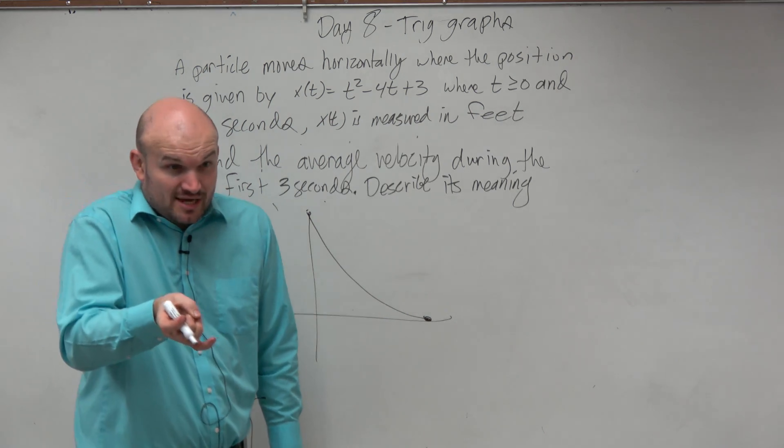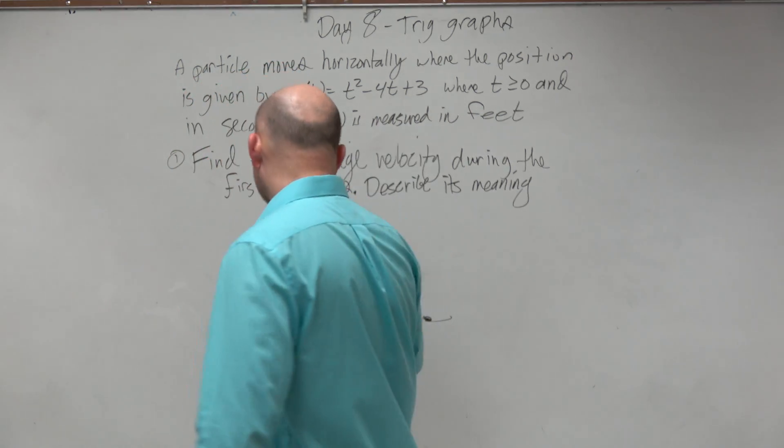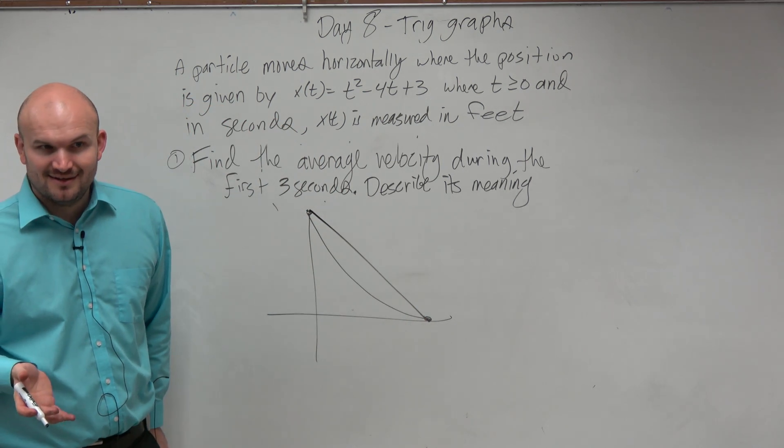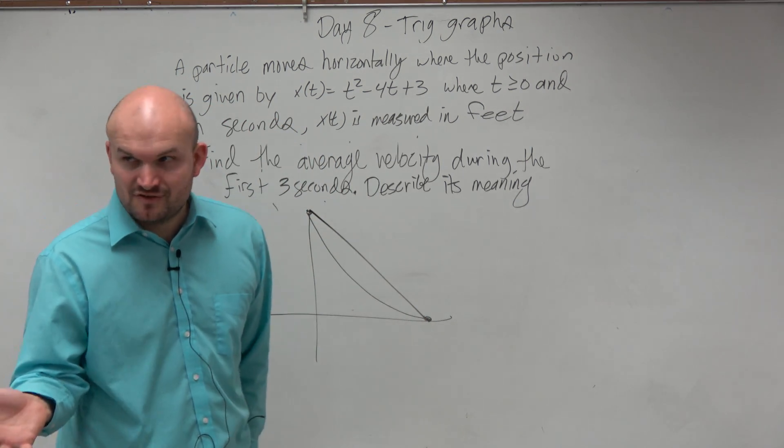Instantaneous velocity is dealing with the tangent line. We've got to find the derivative, right? Average velocity is basically just saying, what is the slope of that line? So we don't need calculus to find the average velocity.